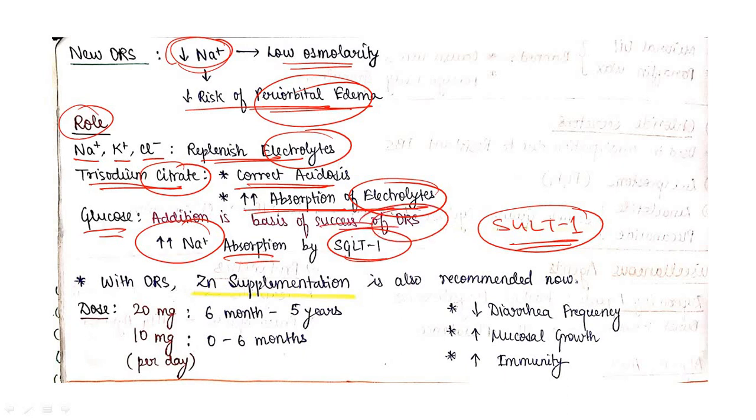With ORS, we also use zinc supplementation. Nowadays it's recommended to use zinc supplementation with ORS. 20 mg is given for six months to five years, and 10 mg for zero to six months.